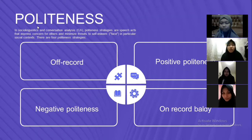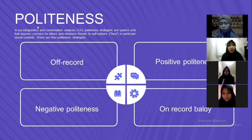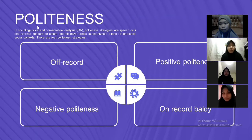I will explain about the issues in discourse analysis. The first issue is politeness. Politeness is having and showing good manners and respect for the feelings of others. There are four politeness strategies: first is off-record, second is negative politeness, third is positive politeness, and fourth is on-record baldly.